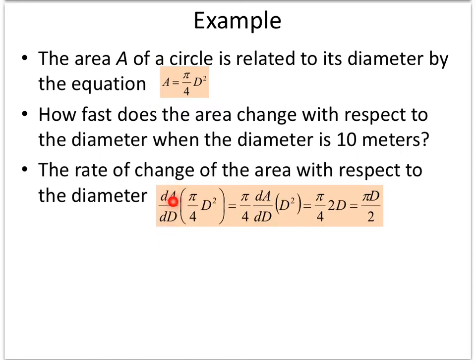That tells me I need to find the rate of change and then plug in 10 for D. I prefer writing derivatives in Leibniz notation because it tells me a couple of things: it tells me this is the change in area over change in diameter, and it tells me the variable of interest. I don't care about anything else in this problem but D.